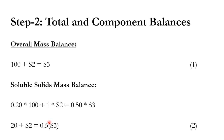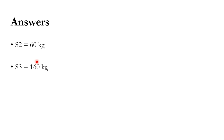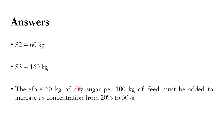Subtracting the equations gives S3, and substituting back gives S2. The results: S2 = 60 kg and S3 = 160 kg. Therefore, 60 kg of dry sugar per 100 kg of aqueous sugar solution must be added to increase the concentration from 20% to 50%. This is a simple single-system mass balance.